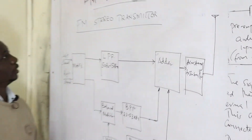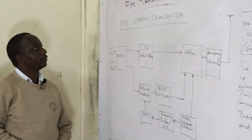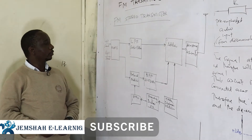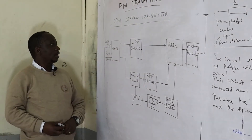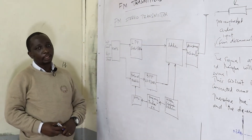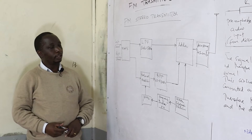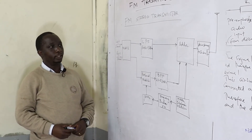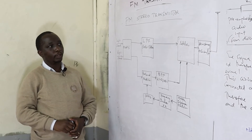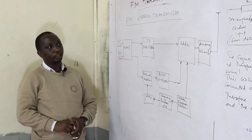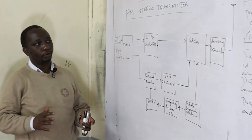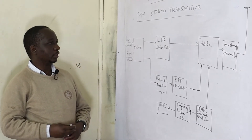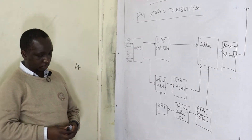This is an FM stereo transmitter. The meaning of stereo is that the left channel and the right channel are normally transmitted as independent channels, but they get combined and plotted in the frequency spectrum as different channels for transmission.